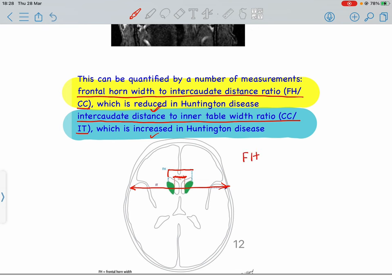That is, FH/CC is decreased and CC/IT is increased. This is a high-yield point for USMLE neurology. Thank you.